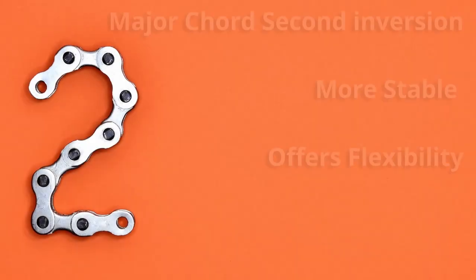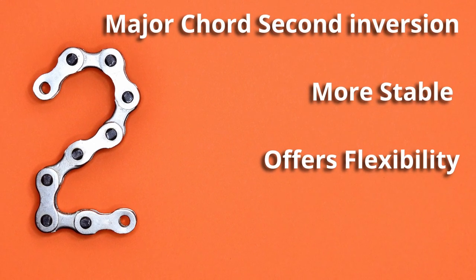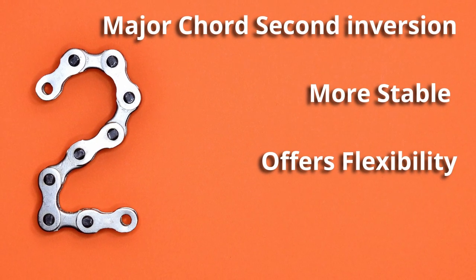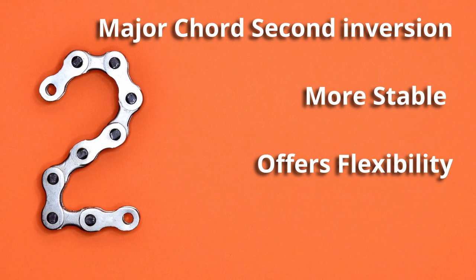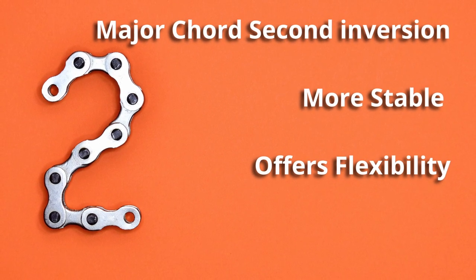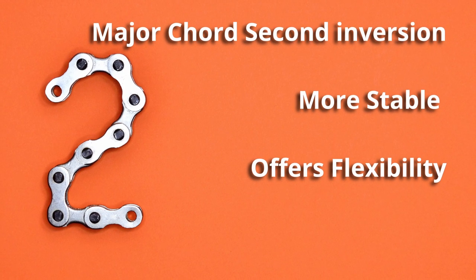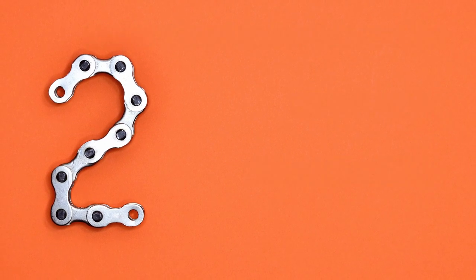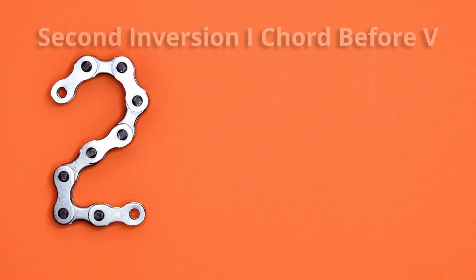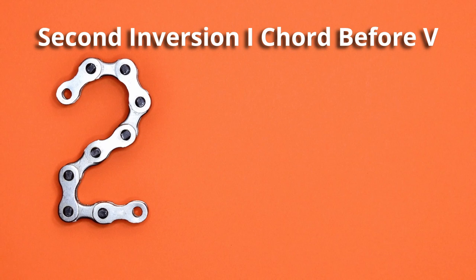The second inversions are more stable than the first inversions and often used interchangeably with the standard major. They feel less like home than a root chord but less mobile than a first inversion. However, they give us flexibility in a chord progression. A typical use would be the one chord second inversion used before the five chord, as they share the same bass note.